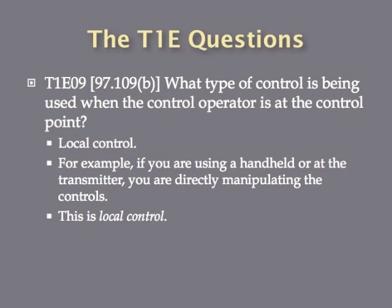What type of control is being used when the control operator is at the control point? This is called local control. So whenever you use a handheld, or you are sitting in front of your transceiver and you are manipulating the controls of that transceiver, you are in local control of that station. What type of control is being used when the control operator is at the control point? It is local control.